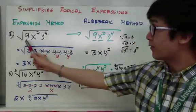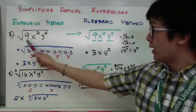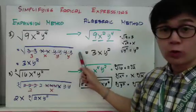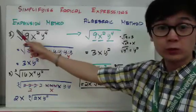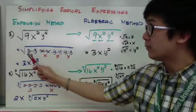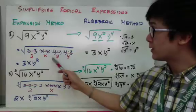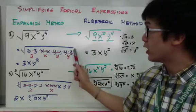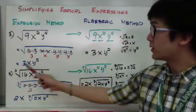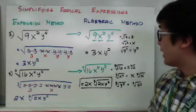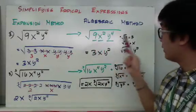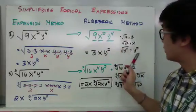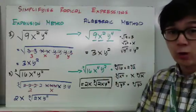Using the expansion method for square root of 9x squared y to the fourth: 9 factors into 3 times 3, giving 2 x's and 4 y's. Since it's a square root, I need pairs — I have a pair of 3, a pair of x, and two pairs of y. All come outside the radical with nothing left inside, giving 3xy squared. Algebraically: square root of 9 is 3, square root of x squared is x, square root of y to the fourth is y squared — result is 3xy squared.